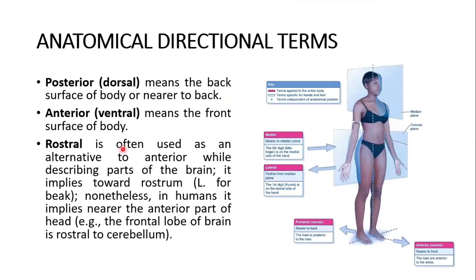Rostral is often used as an alternative to anterior while describing parts of the brain. It implies towards the rostrum — Latin for beak or peak. In humans, it implies nearer to the anterior part of the head. For example, the frontal lobe of the brain is rostral to the cerebellum, which lies in the posterior cranial fossa.